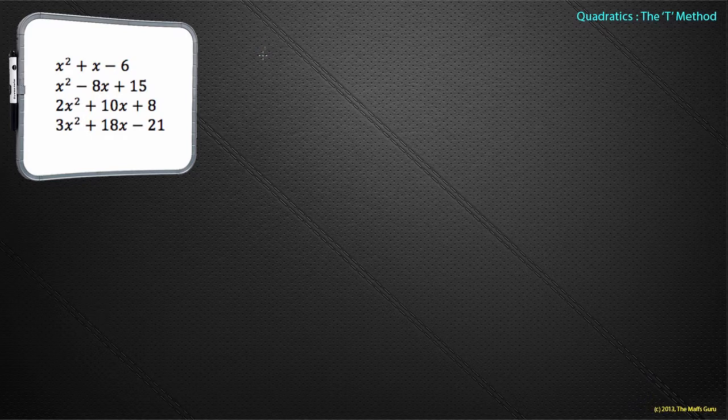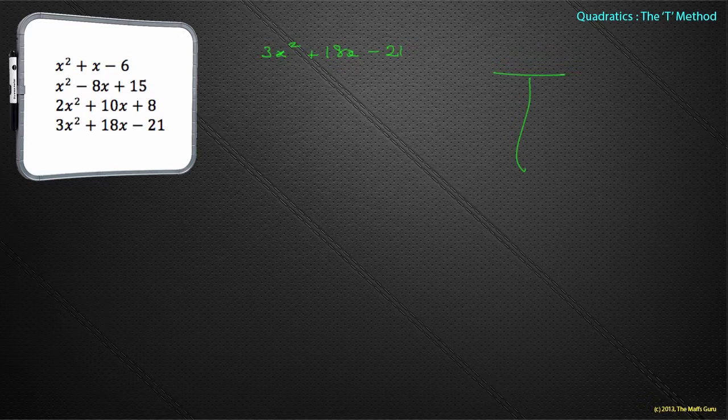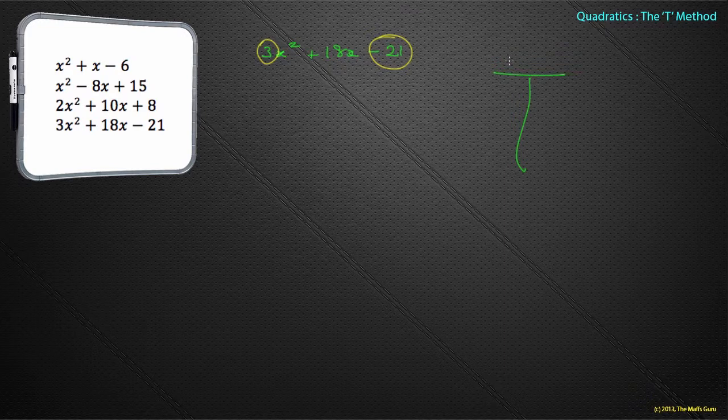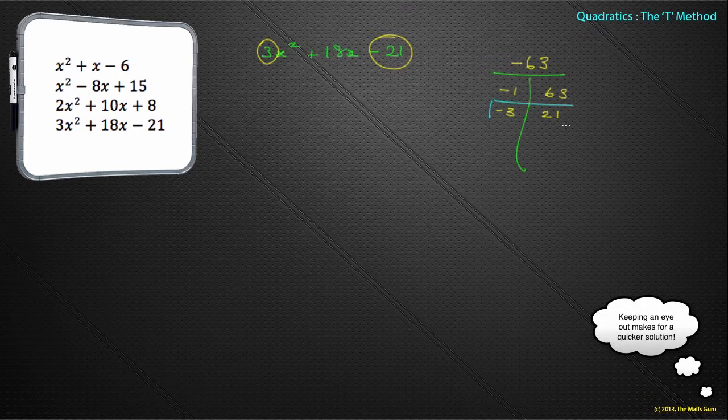We have 3x² + 18x - 21. What do we do? Well, we draw our T, and we take our first number, if you remember, 3, and our last number -21, and we multiply them together, which is -63. Now don't panic, big numbers aren't necessarily bad. We can sit there and do, our factors are -1 and 63, and -3 and 21. Hold on, I don't actually need to go much further. I could do them all, but sometimes it's useful just to keep an eye out on what's happening when you do this. And I've got -3 and I've got 21, which I know when I add those together give me 18. So I found my two factors.